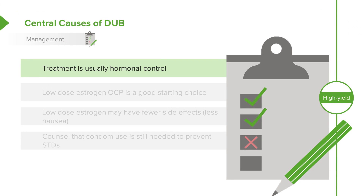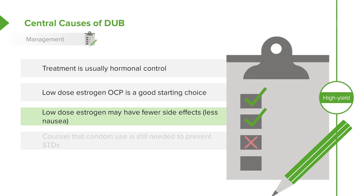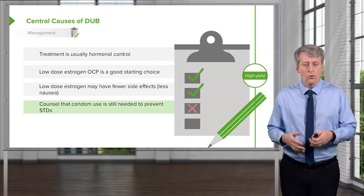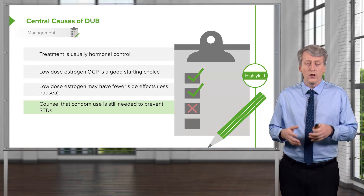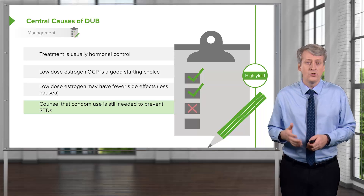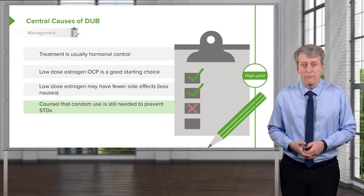How do we treat central causes of dysfunctional uterine bleeding? This is the most common problem, and usually what we'll do is provide patients hormonal control. The best way to start is a low-dose estrogen oral contraceptive pill. These have fewer side effects than higher dose estrogens, which can cause quite a bit of nausea. It's important that we always counsel patients receiving oral contraceptive pills that they are not preventative of sexually transmitted diseases, and patients should use condoms in addition to their oral contraceptive pill.